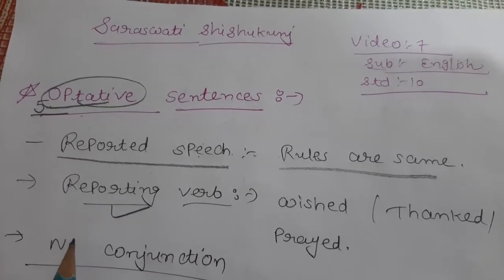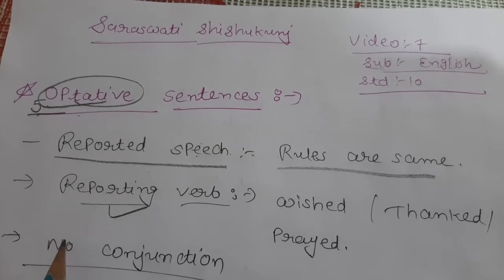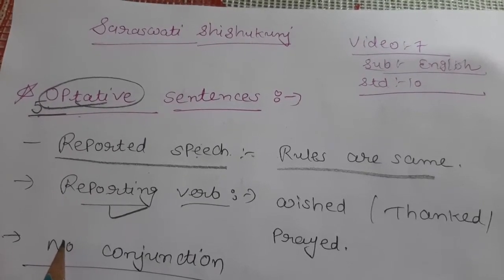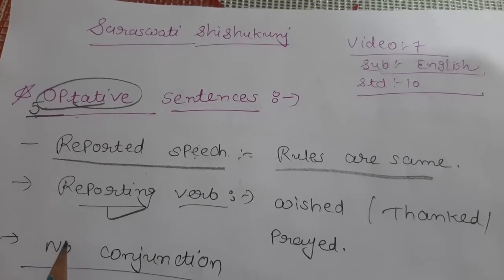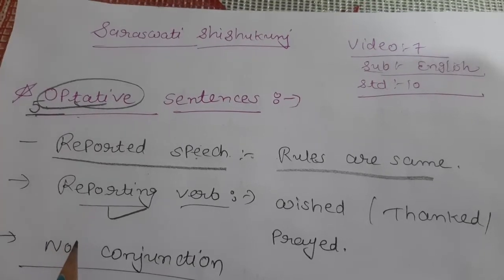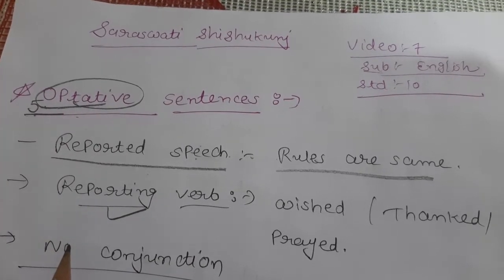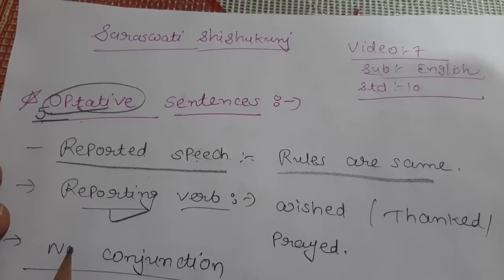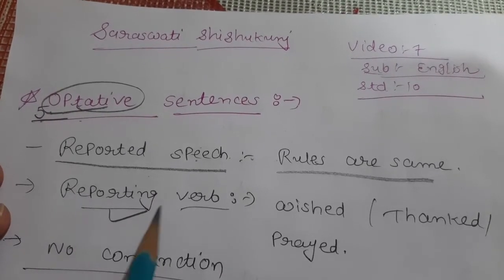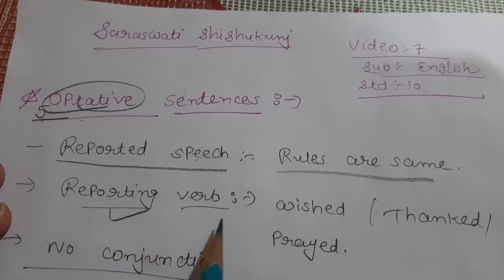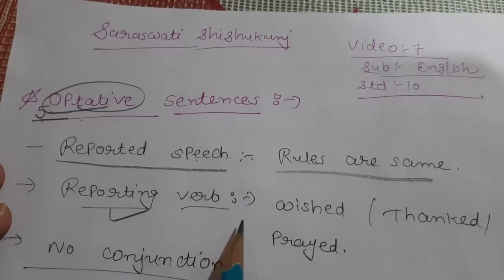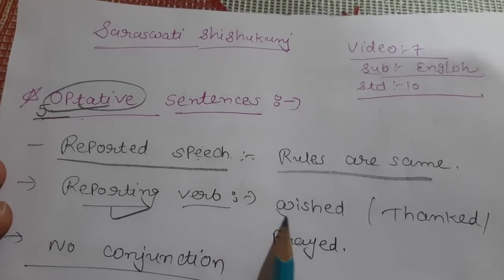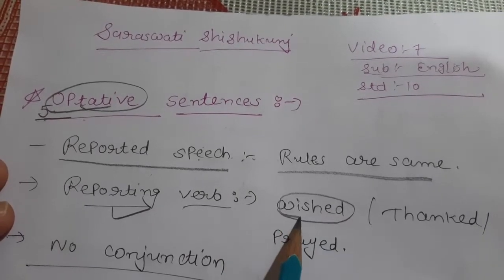Optative means sentences like 'thank you,' 'sorry,' 'excuse me,' 'thank you so much for your help' — such kind of sentences. You need to keep in mind how to recognize optative sentences. Here, if somebody is wishing you good morning, good afternoon, good noon, then your reporting verb will be 'wished.'